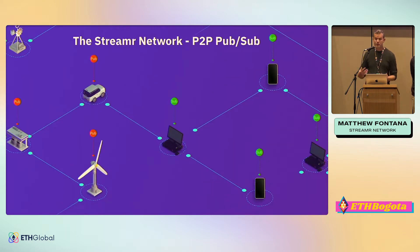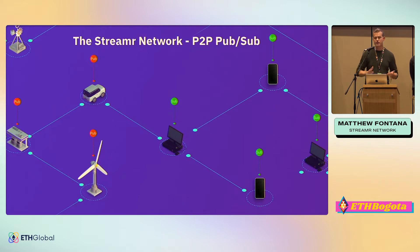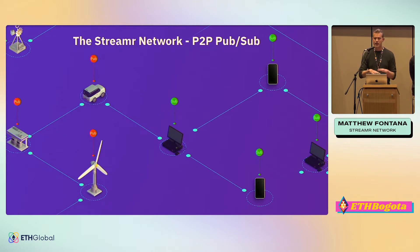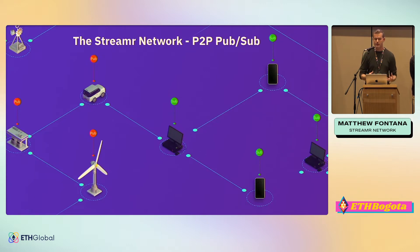The Streamr network looks quite different. If the Web2 way was this vertical flow of data through data centers run by the Silicon Valley giants, the Streamr network has data flowing horizontally through an overlay mesh network made up from the users of the network — the users that are intrinsically interested in the data.